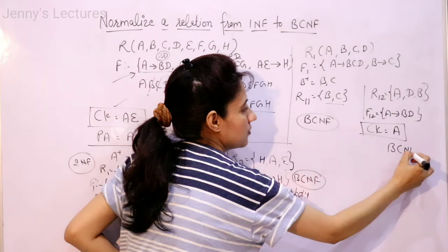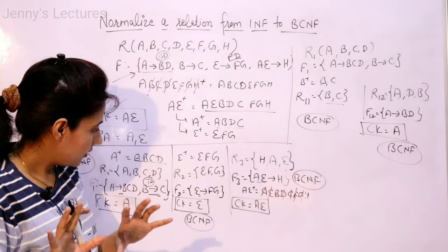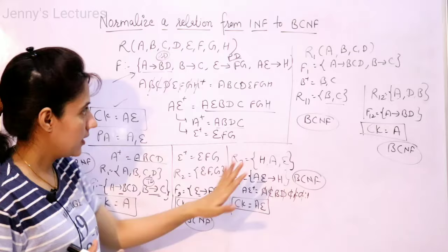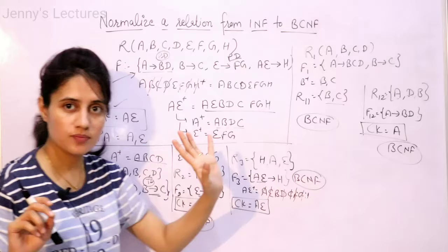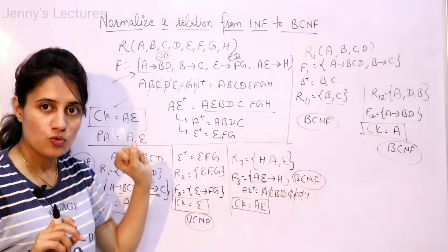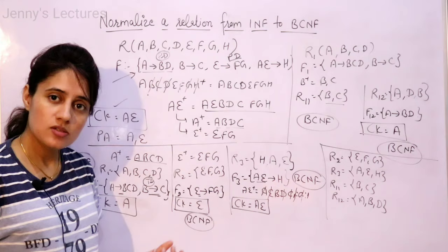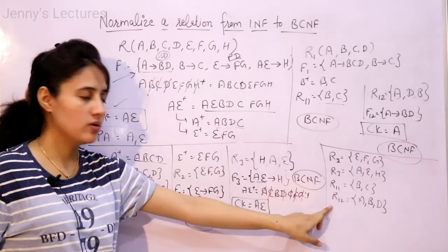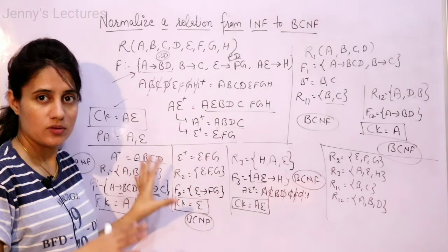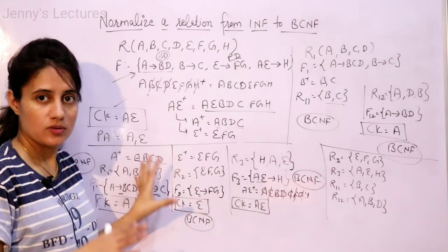Now this subrelation is in BCNF. Finally, we have converted the entire relation into BCNF. How many subrelations are there? 1, 2, 3, and 4. We are not going to consider R1 because we decomposed it further. So four subrelations are required: R11(B,C), R12(A,B,D), R2(E,F,G), and R3(A,E,H). If you are asked how many subrelations are required to convert this relation into BCNF, the answer would be four. This is the step-by-step explanation of how to convert a relation from 1NF to BCNF.